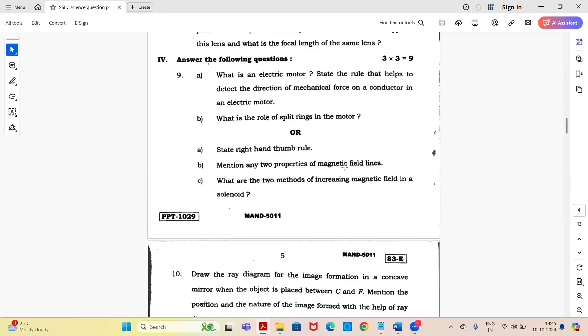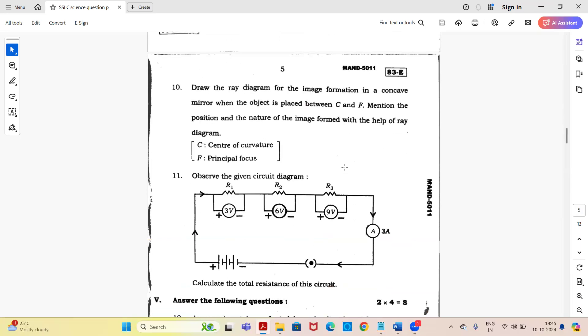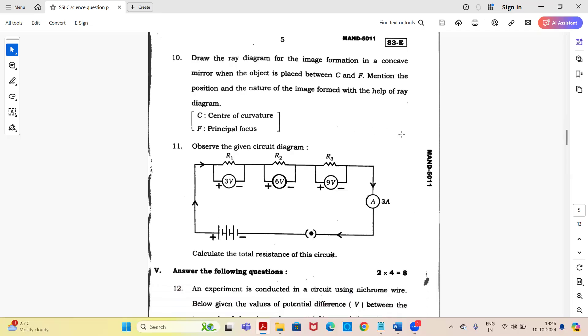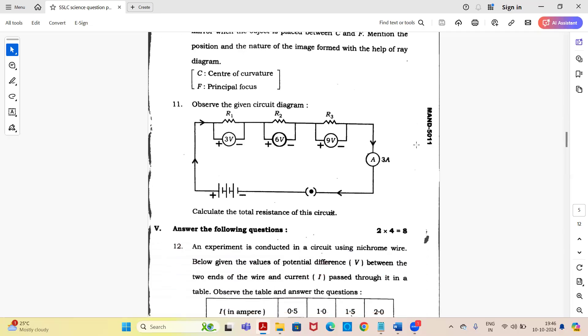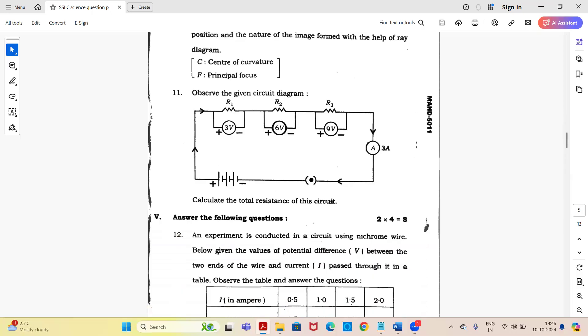Question 10: draw the ray diagram for image formation in a concave mirror when the object is placed between C and F. Mention the position and nature of the image formed with the help of the ray diagram. C is center of curvature and F is principal focus. Next, observe the given circuit diagram and calculate the total resistance of this circuit.